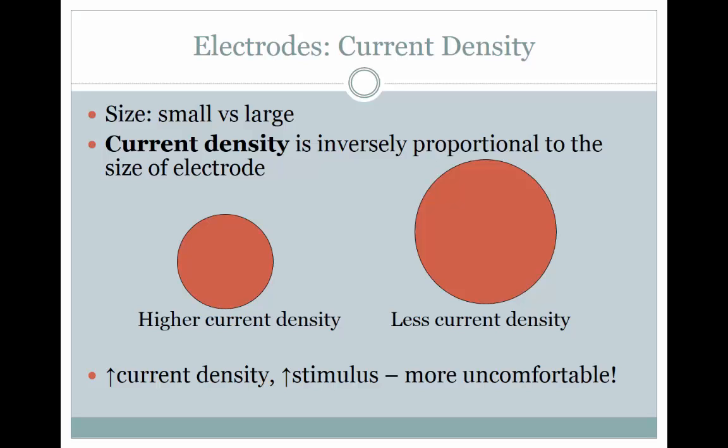The conductivity of the material of the electrode will affect the amount of current flow. Carbon or silicone impregnated rubber electrodes seem to have better conductivity than do metal sponge electrodes, but their useful life is limited. The carbon or silicone will leach out with use, thus reducing the electrode's conductivity.